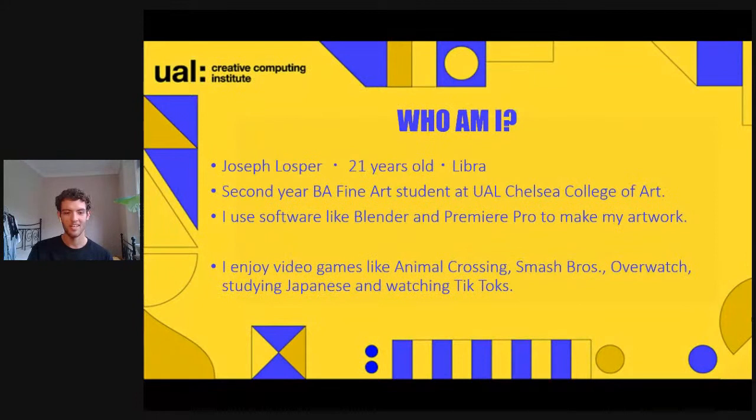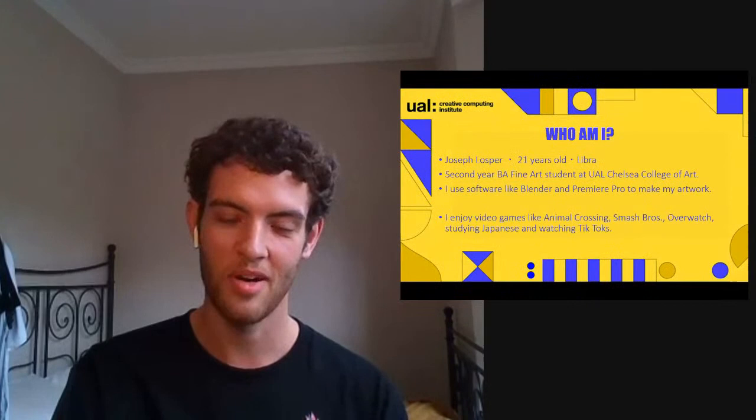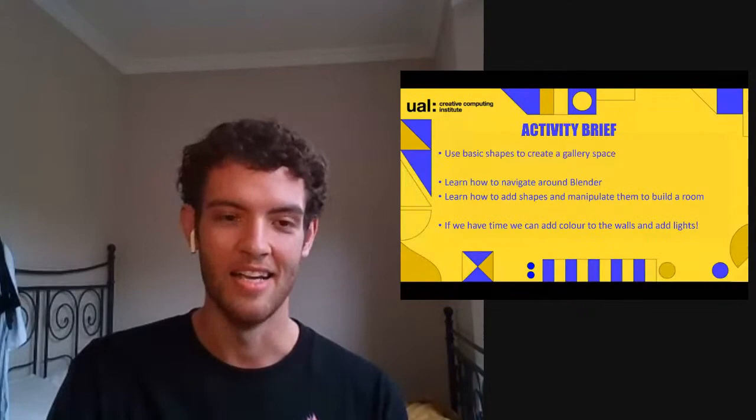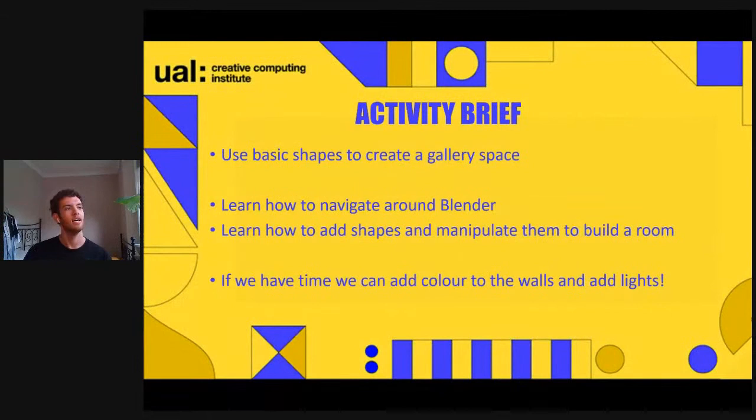So who am I? My name is Joseph Losfer, I'm 21 years old, a Libra born in October, and a second-year BA Fine Arts student at UAL Chelsea College of Art. I use technology like Blender and Premiere Pro to make my artwork. When I'm not making work, I enjoy video games — a lot of Animal Crossing recently, Smash Bros, Overwatch — I'm studying Japanese, and I've become quite addicted to TikTok.